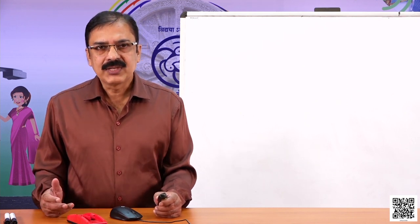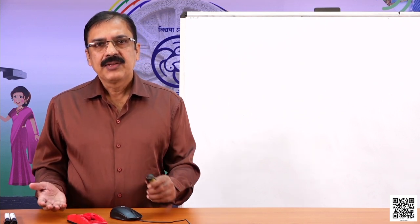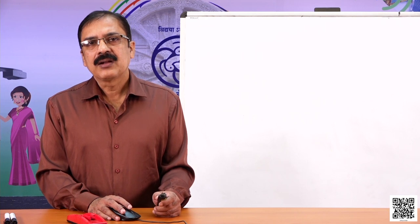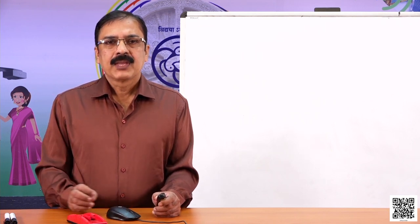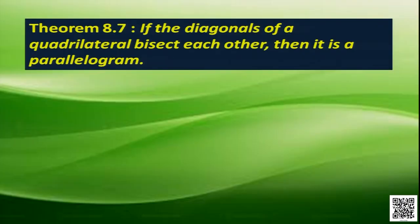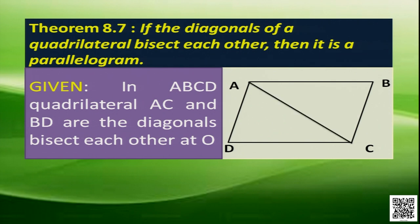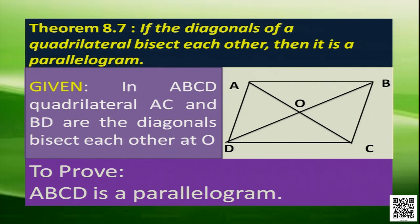Now we proved that if a quadrilateral is a parallelogram, then its diagonals bisect each other. What is the converse of this theorem? The converse says: if the diagonals of a quadrilateral bisect each other, then it is a parallelogram. To prove this, consider figure ABCD as a quadrilateral where diagonal AC and diagonal BD bisect each other at O, meaning AO equals CO and BO equals DO. Then we have to prove that ABCD is a parallelogram.